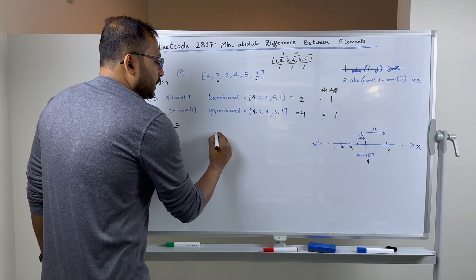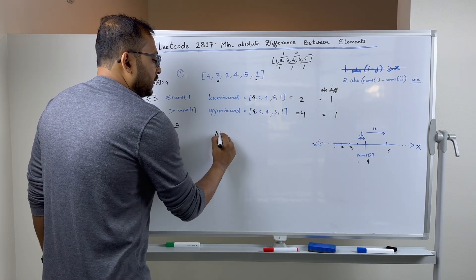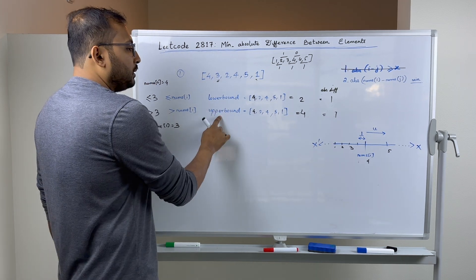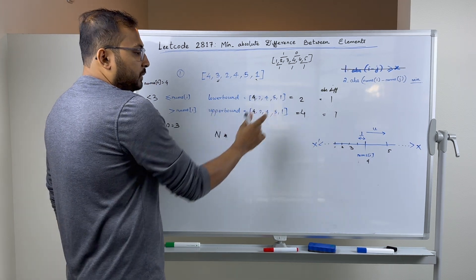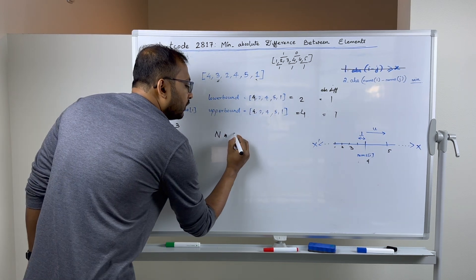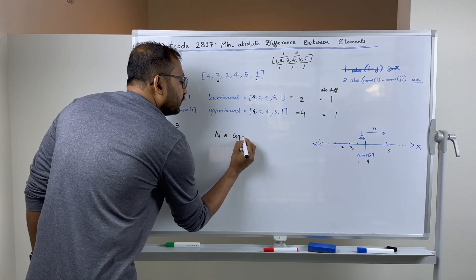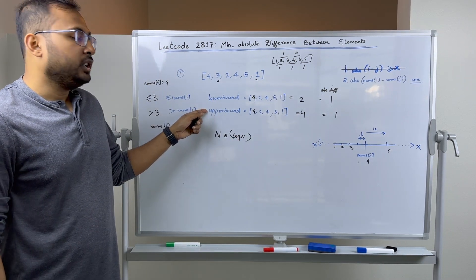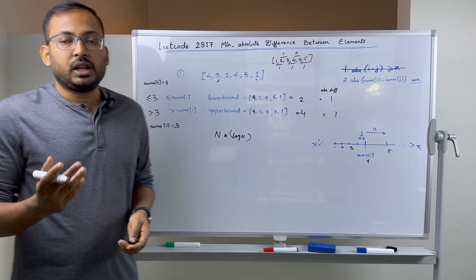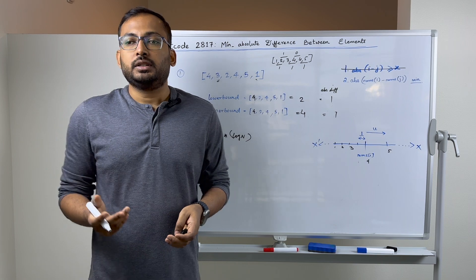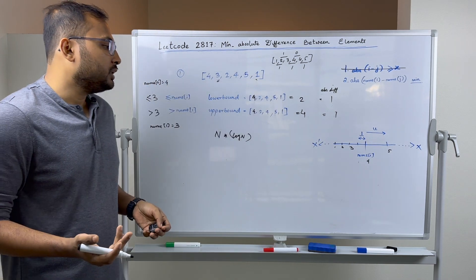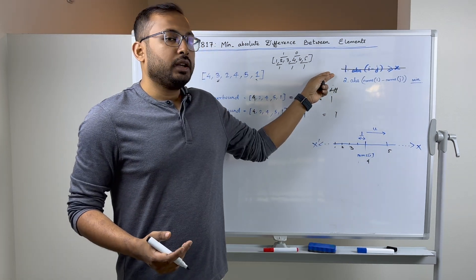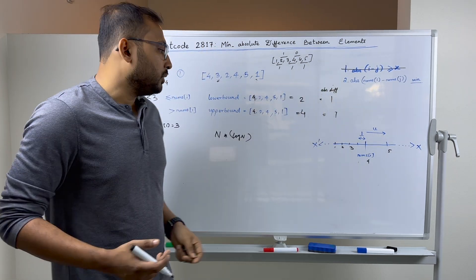Iterating through the array takes O(n) time and finding the lower and upper bound in a set takes O(log n) time. This is a standard operation in Java or C++ using TreeSet or similar structures. Now let's add the index condition back and solve the harder problem.